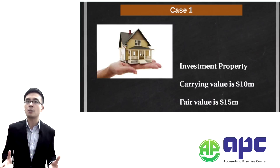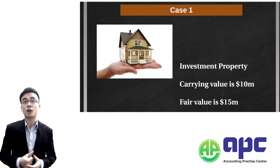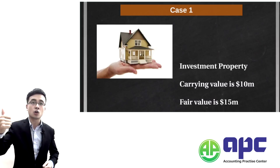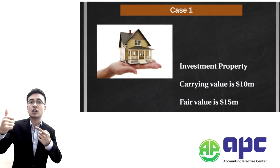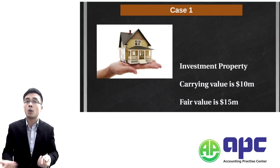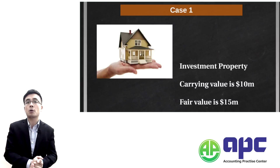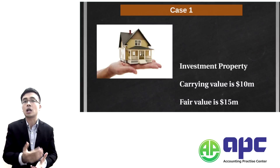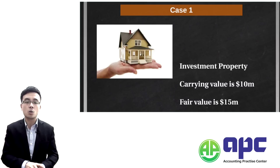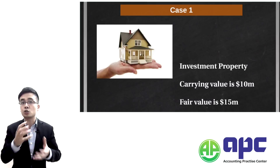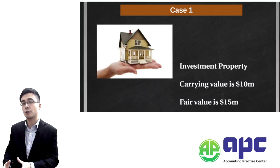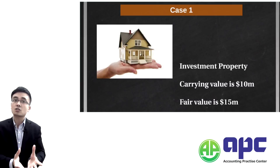The way we determine fair value according to IFRS 13 is first to see whether or not a principal market actually exists — whether there's a market where we can buy or sell the investment property quite easily. If that market exists, we use that price adjusted for transportation costs, which reduces the fair value.